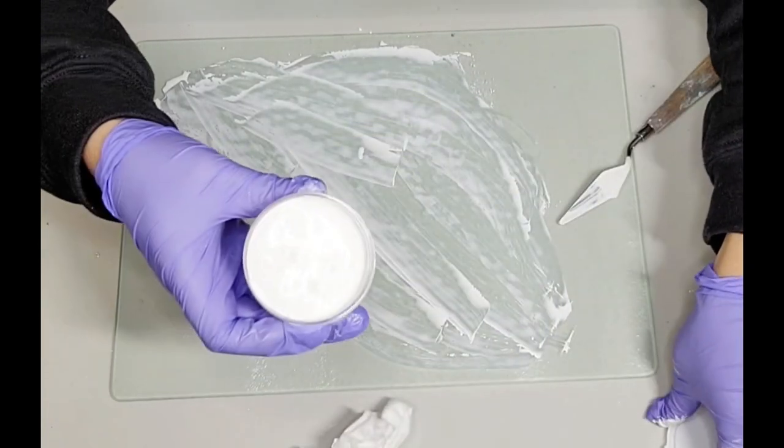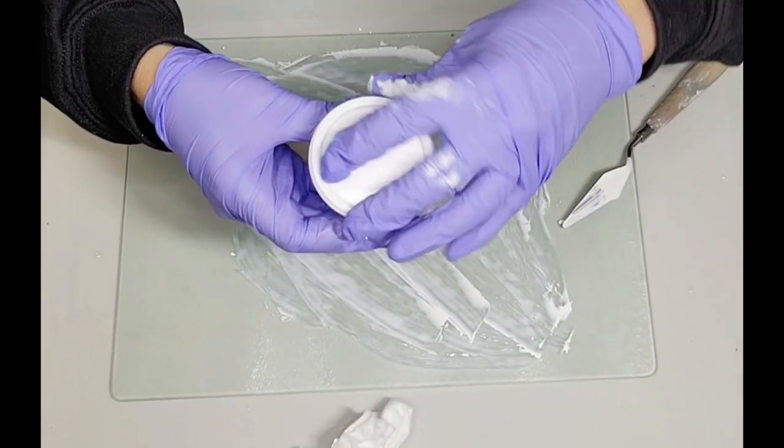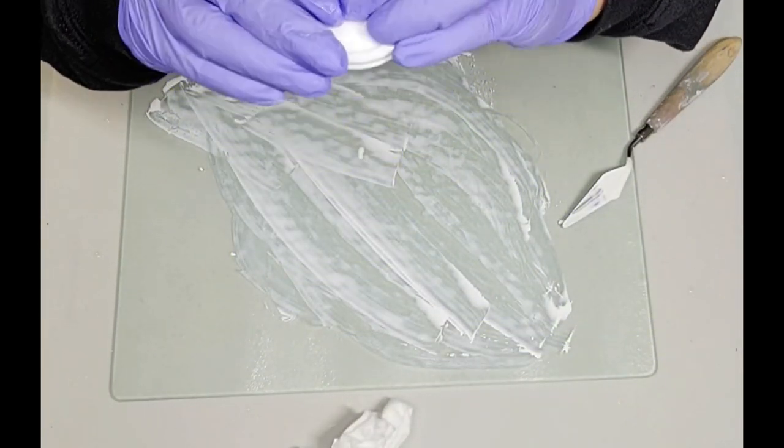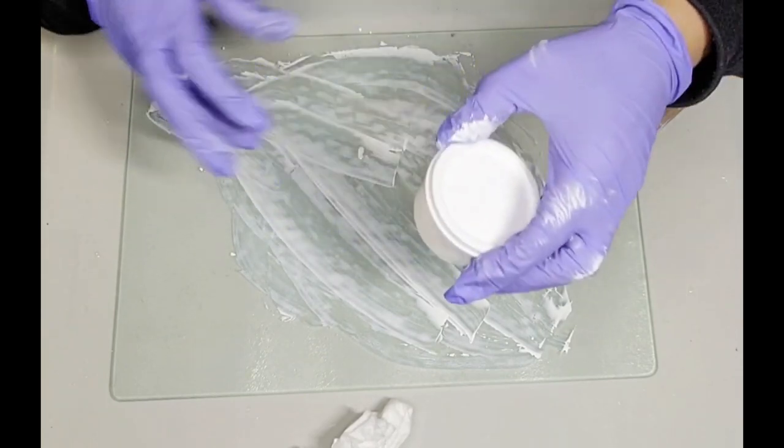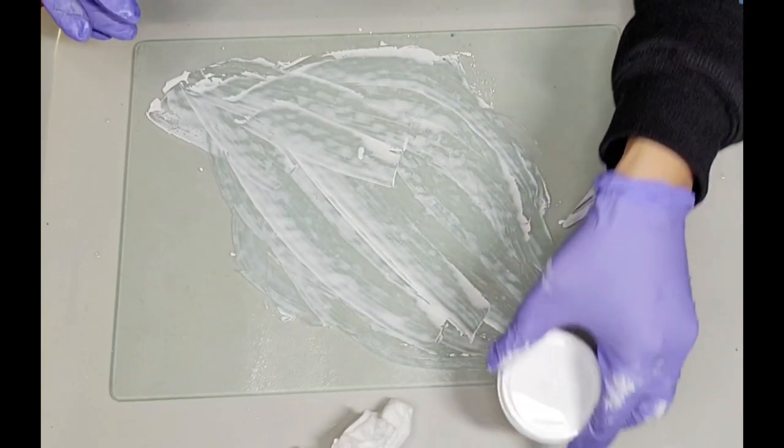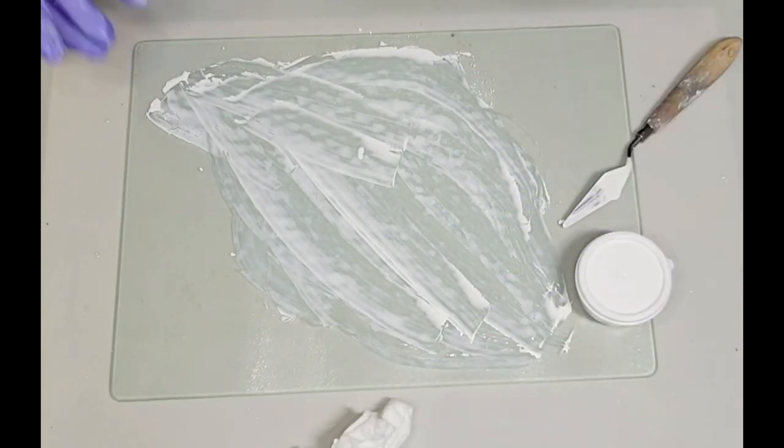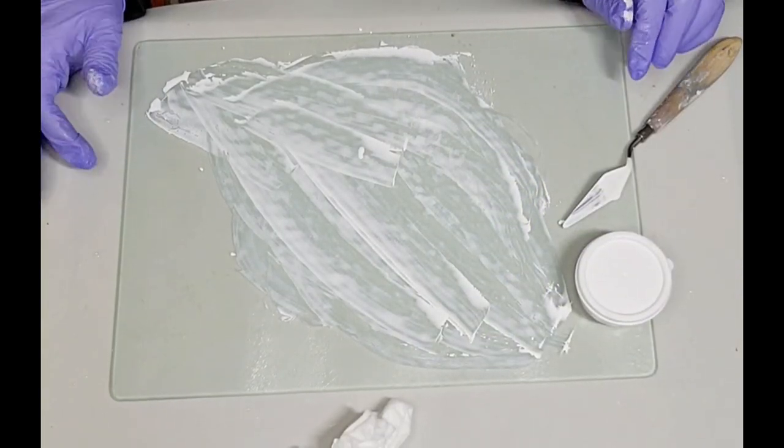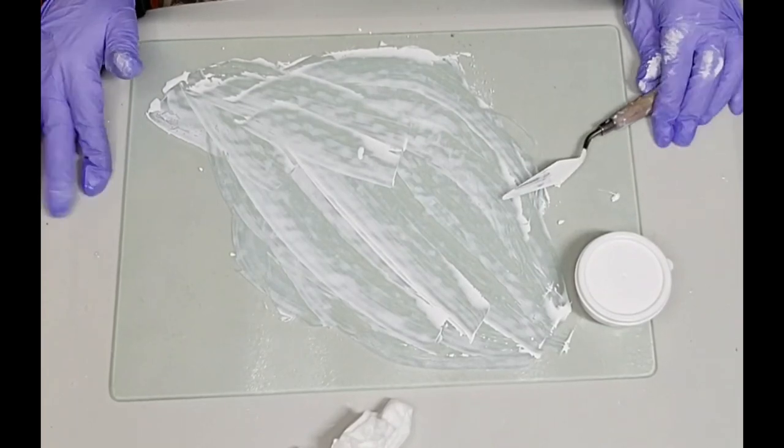And there you have it, it's all done. Let's put the lid on it and I'll be good for quite a while with this until I need to make more. Okay, that's it, that's how I make my white pigment paste.